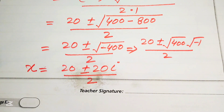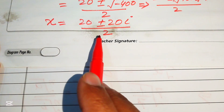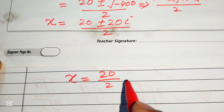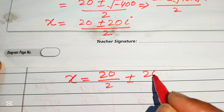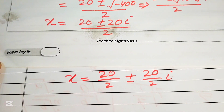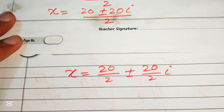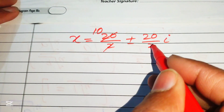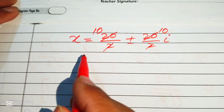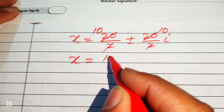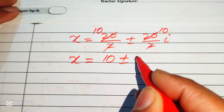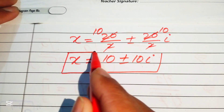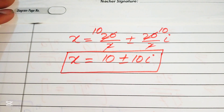We break this fraction and write x equals 20 over 2, plus or minus 20 over 2 times iota. Simplifying, 20 over 2 is 10, so we get x equals 10 plus or minus 10 iota. These are the two complex values of x.